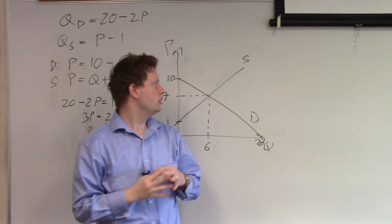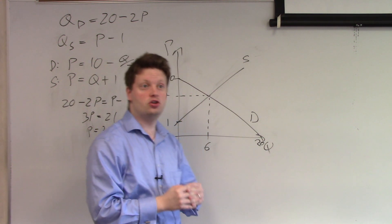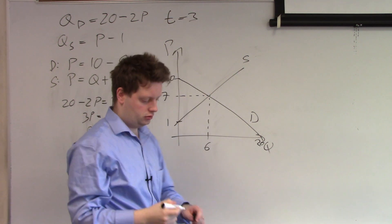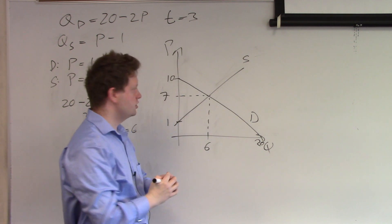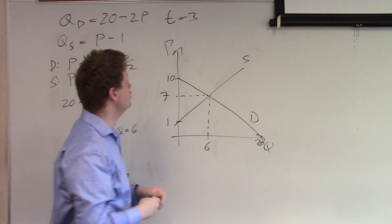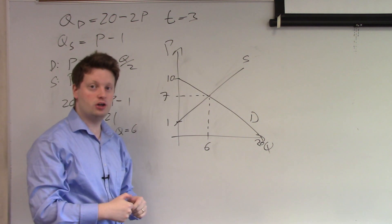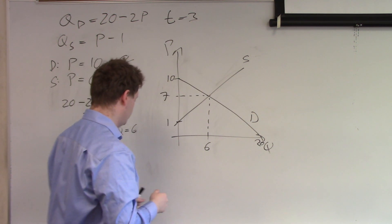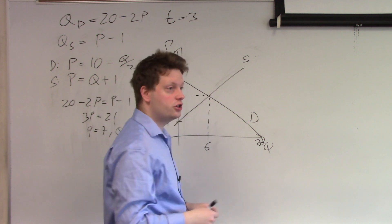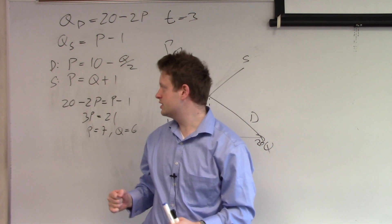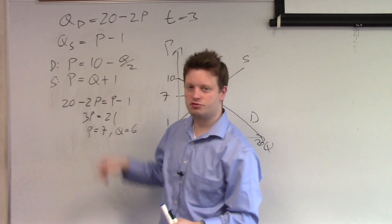Now let's assume we impose a tax of 3. If we impose a tax of 3 dollars then we need to shift the supply curve upward by 3 dollars. If we shift the supply curve upward by 3 dollars we can get a new supply which is the supply plus tax and we can put it in this format.